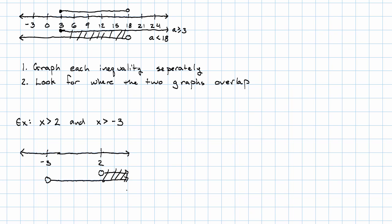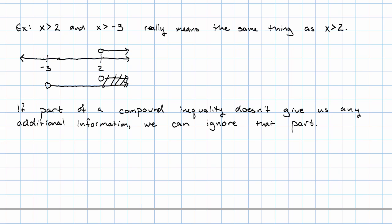These overlap only to the right of 2. So actually it turns out, once we look at the graph, that x is greater than 2 and x is greater than negative 3 really just means the same thing as x is greater than 2. That is, if we already know that x is greater than 2, telling us that it's also greater than negative 3 doesn't give us any additional information. If part of a compound inequality doesn't give us any additional information, we can just forget about that part. We can leave it out.